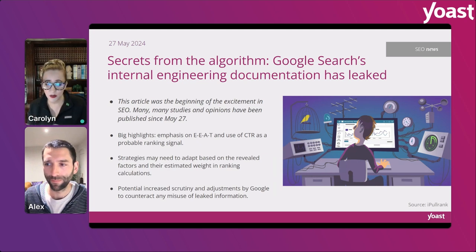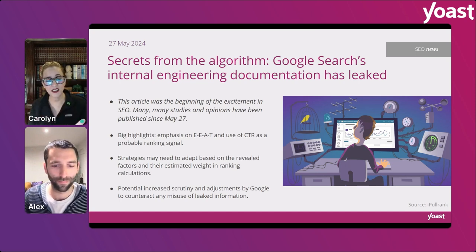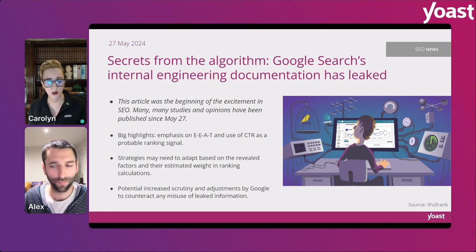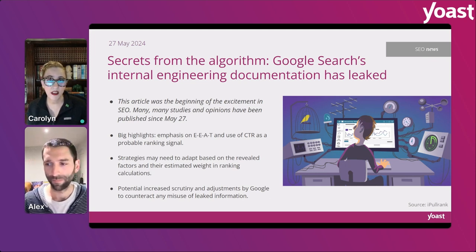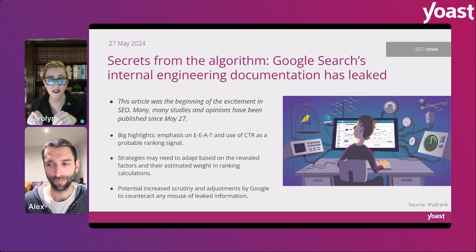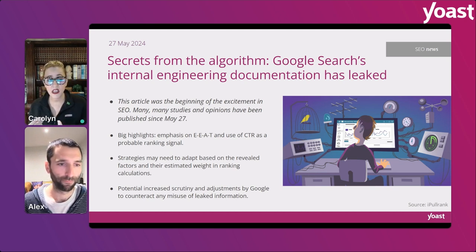There's nothing in this document telling you exactly what proportions or which ingredients are included. It's just an inventory of everything in Google's pantry — things they're keeping on hand in case they want to add them into the recipe. We don't know how much of the click data they're using or how much of anything they add into the recipe.